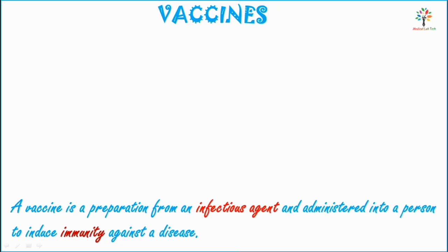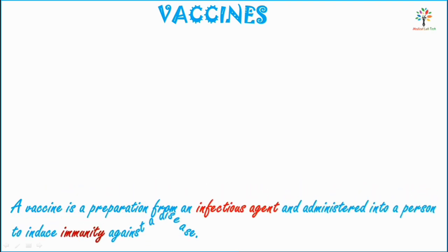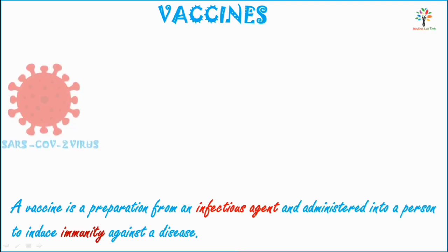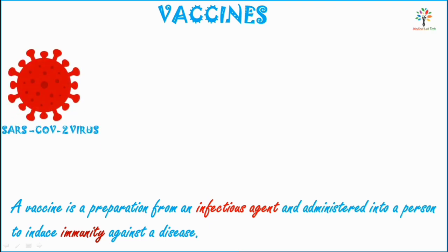A vaccine is a preparation from an infectious agent that is administered into a person to induce immunity against a disease. Suppose you are going to prepare a vaccine for the SARS-CoV-2 virus, which causes COVID-19. For preparation of the vaccine, you have to process the virus in such a way that it cannot cause infection in human beings, but it will retain its antigenicity so that it can induce an immune response in the individual.